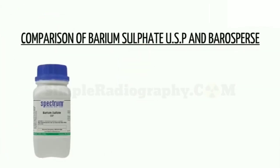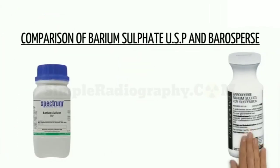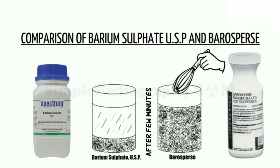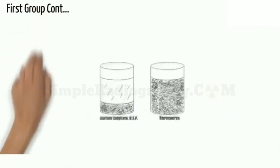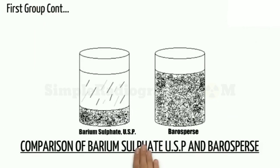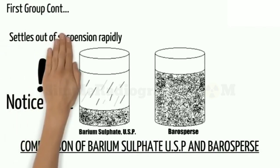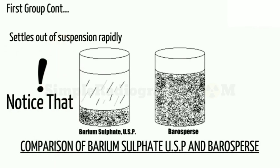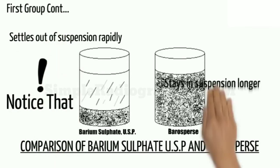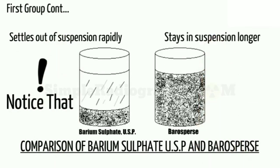Comparison of Barium Sulfate USP and Baris Purse after being stirred and resting a few minutes: Both mixtures seen in the images are Barium Preparation and water. They were stirred at the same time and allowed to sit for 10 minutes. Notice that Barium Sulfate USP settles out of suspension rapidly, while Baris Purse stays in suspension longer.